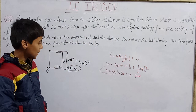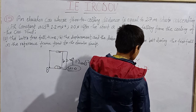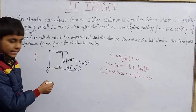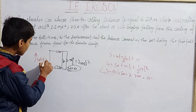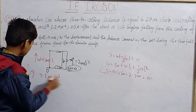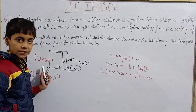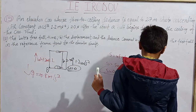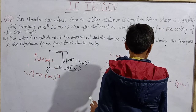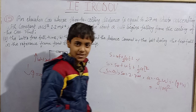The bolt starts at s₀ = 2.7 meters from the origin. The elevator accelerates upward at w = 1.2 m/s², and the bolt falls downward under g = 9.8 m/s². The relative acceleration is: minus g minus w, which equals minus (g + w) = minus 11 meters per second squared. This is our net acceleration in the elevator's reference frame.